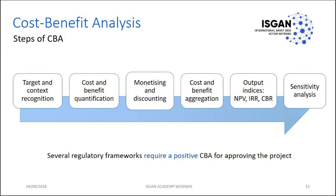CBA has been applied for many years in companies, and recently it is also used for allocating public money. There are many regulatory frameworks in the world that require a positive CBA for approving a project. In Italy, for example, cost-benefit analysis is now applied to investments in the transmission system — if a TSO proposes new investments, the proposal must include a CBA to justify it. The same applies to smart meters. Cost-benefit analysis is really becoming crucial for many investments, particularly in power systems.